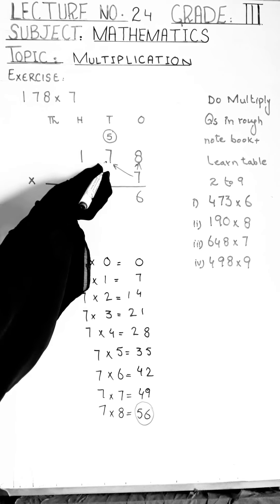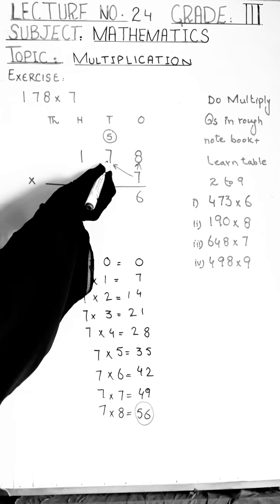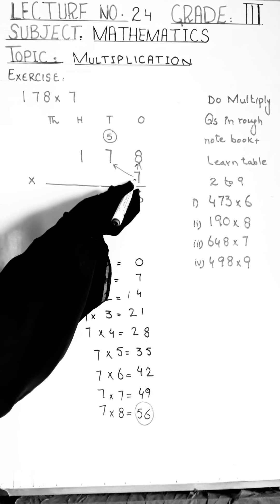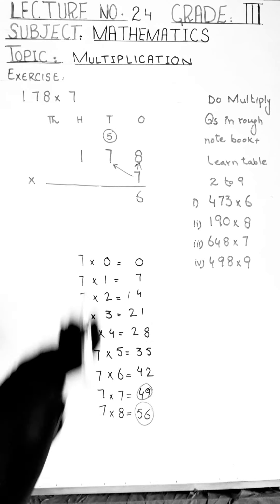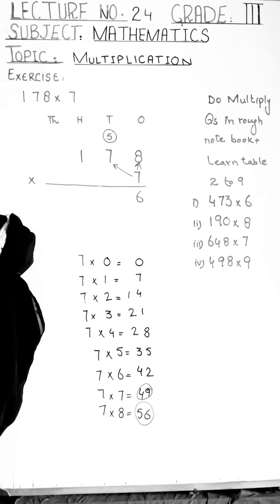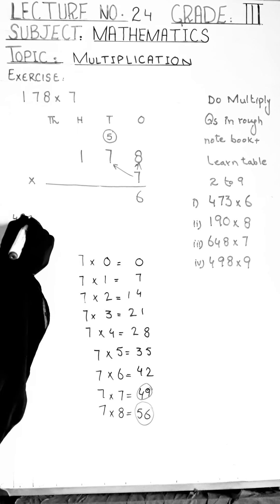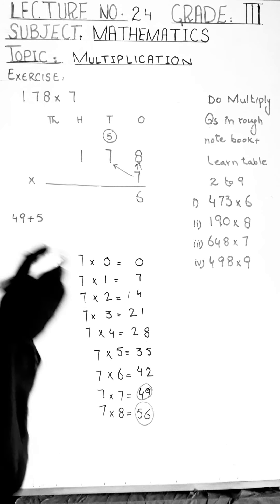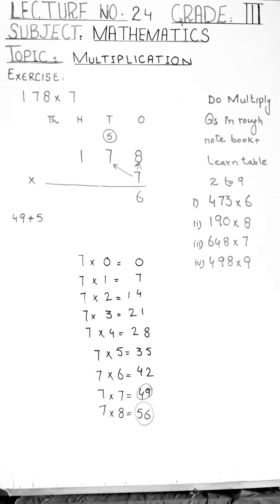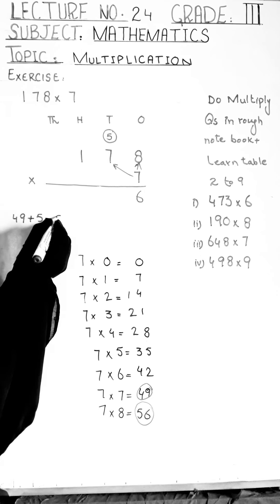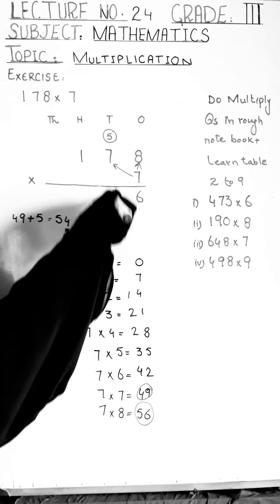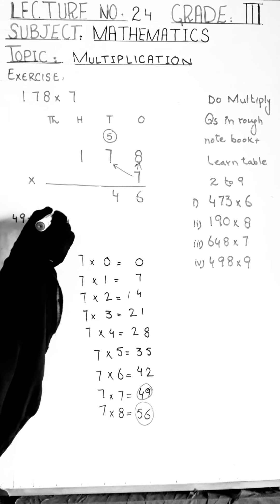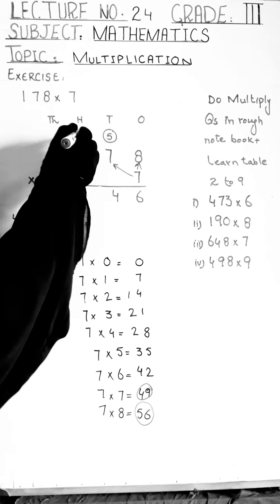Now we read the table of seven up to seven — not up to five, students. Seven sevens are forty-nine. We simply add the carry five to forty-nine: fifty, fifty-one, fifty-two, fifty-three, fifty-four. We write the right digit, four, in the tens column and carry the left digit, five, into the hundreds column.